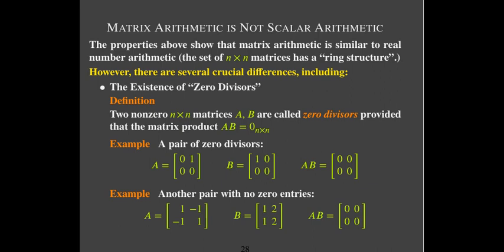As an interesting observation, what is the rank of matrix A in our zero divisor example? The columns are parallel to each other — not linearly independent but not all zeros — so this is a rank one matrix. The same holds for B: its columns are multiples of each other, also rank one. But their product is rank zero. We're going to learn that through multiplication you can never increase the rank; the product's rank can only be less than or equal to that of the individual matrices.